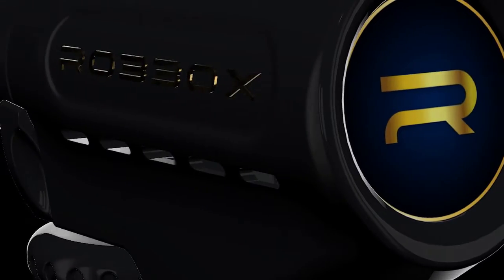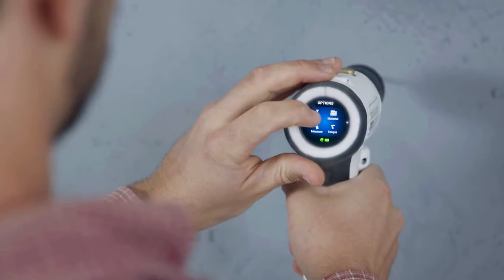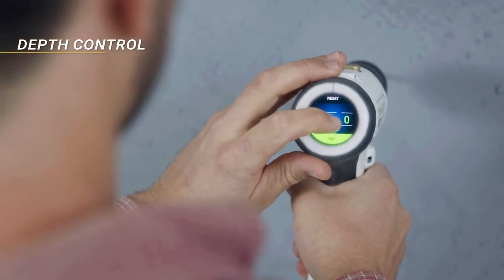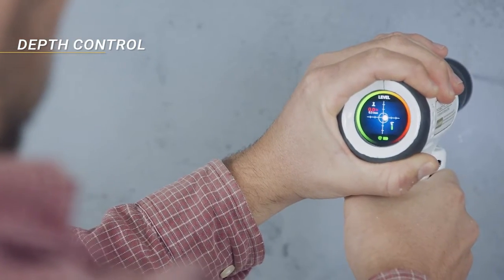Then, our imagination came up with auto set features. A smart drill allows for that. First, there's depth control. Set up how many inches or centimeters you want to go into the wall and the drill stops automatically when you reach it.